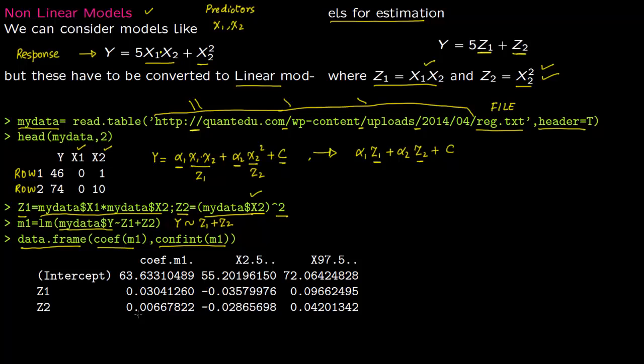So these are the coefficients and these are the confidence intervals. So the model we get is Y equals, our coefficient is 63.63, so the constant term is 63.63.